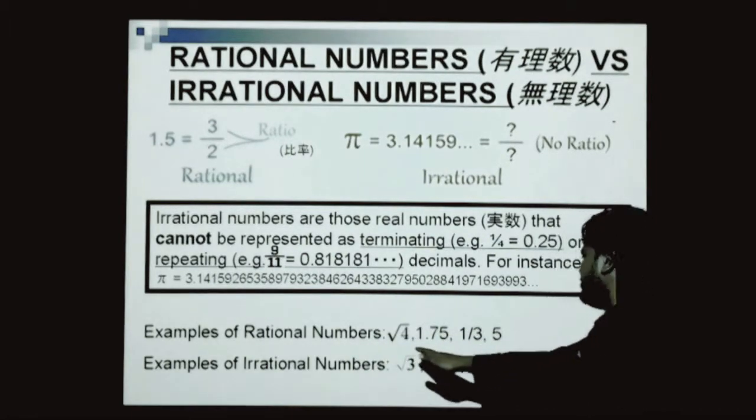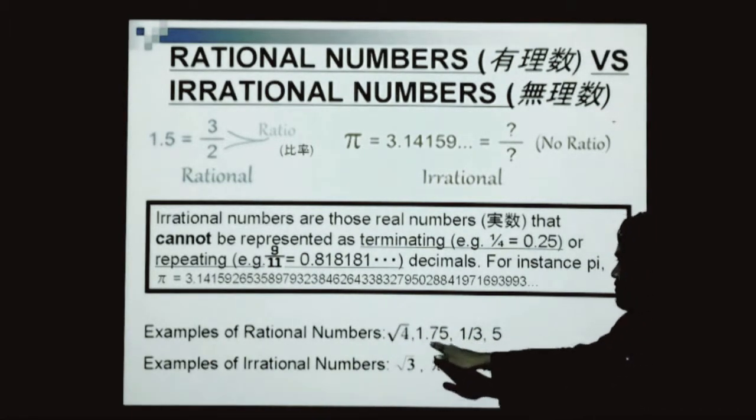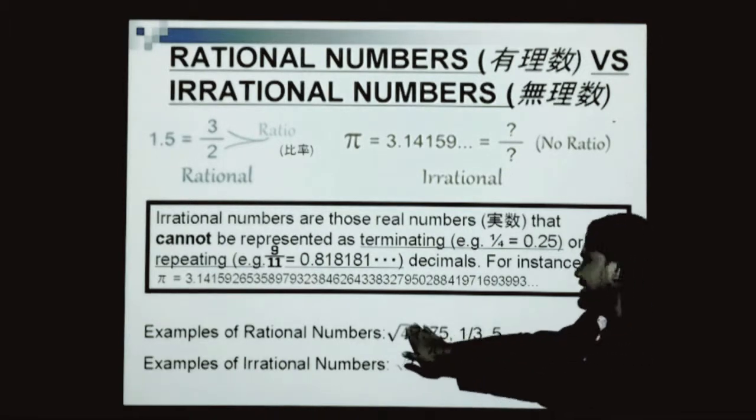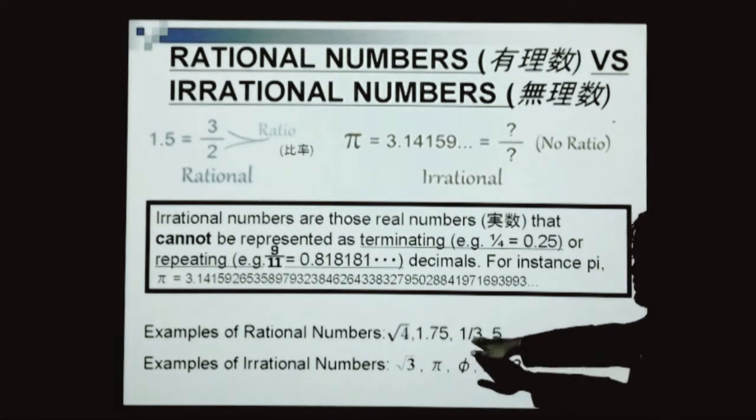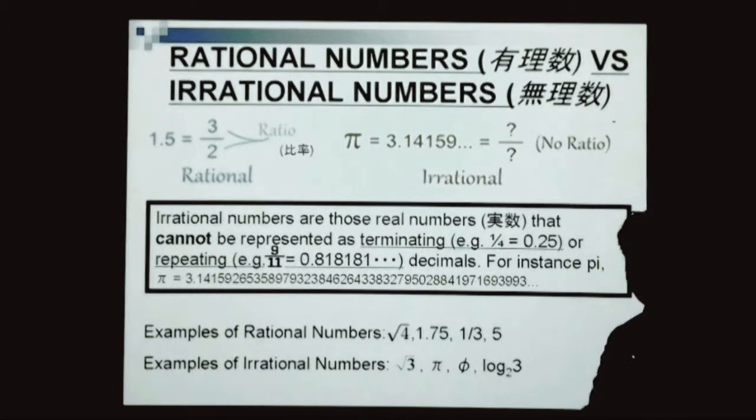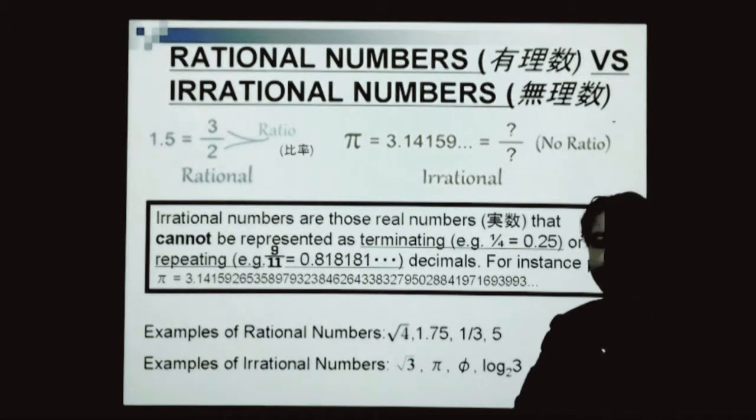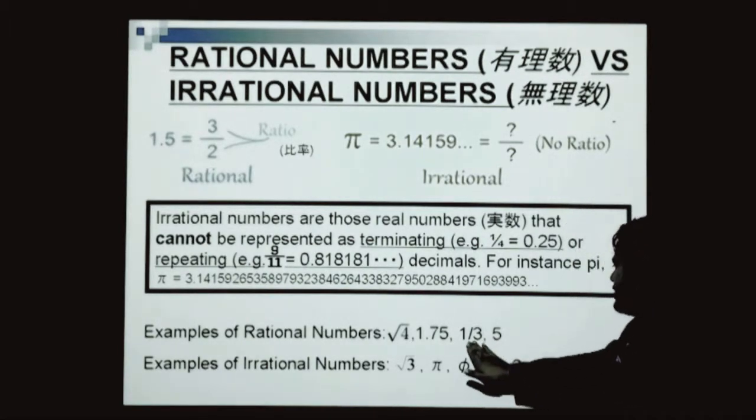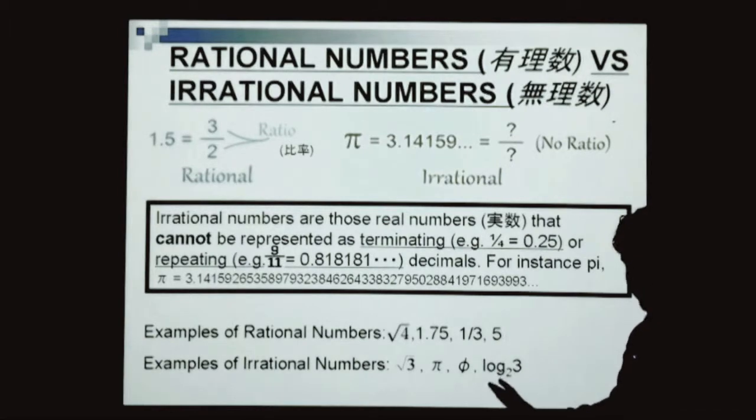Examples of rational numbers: square root of 4, because that equals 2; 1.75, which can be written as 1 and 3 over 4; 1 over 3 or one third; and the integer 5.